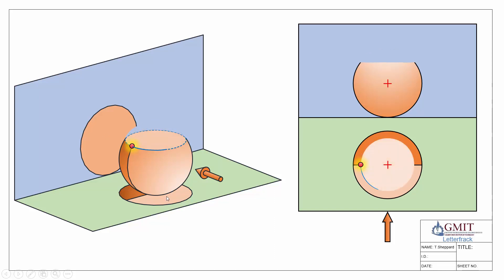Another way we can visualize this is if we literally sliced off the top of our sphere at the height where our point is. That would give us a circular shape — imagine cracking an egg; there's the cracked edge, and you can see where it meets the edge is where our point is going to be in our elevation.